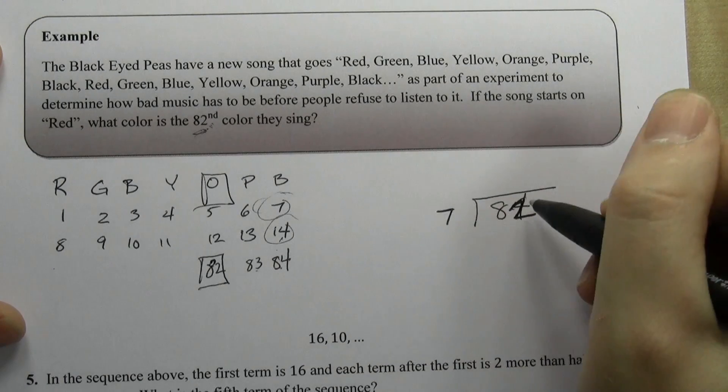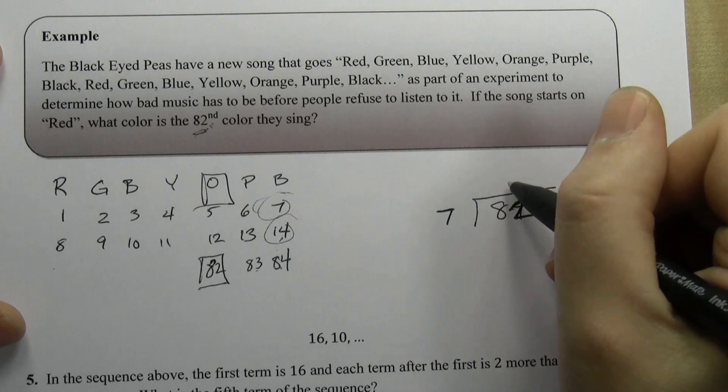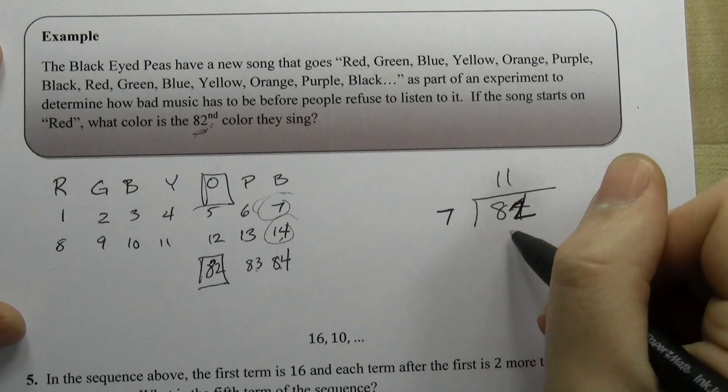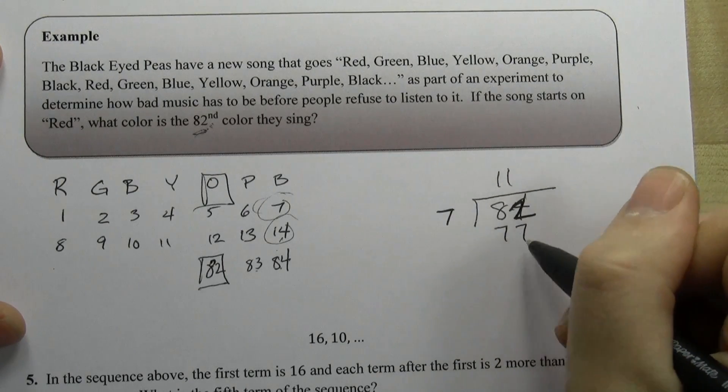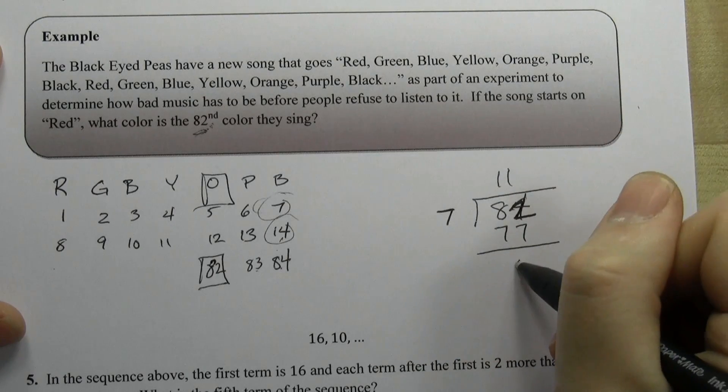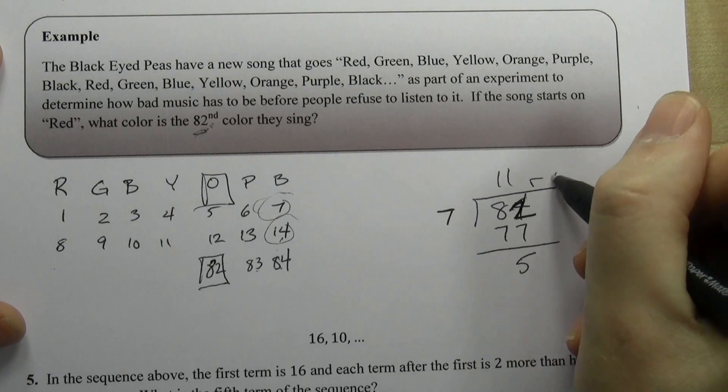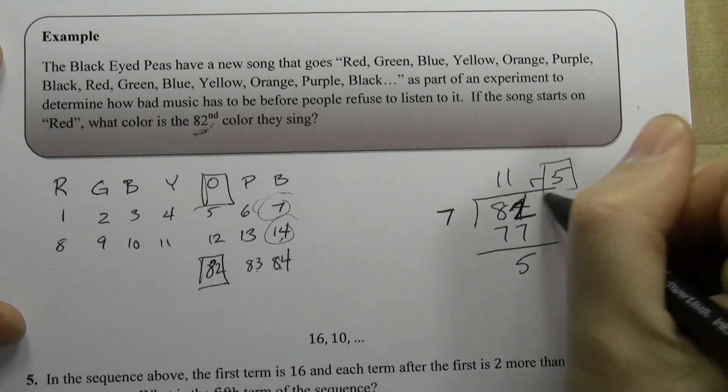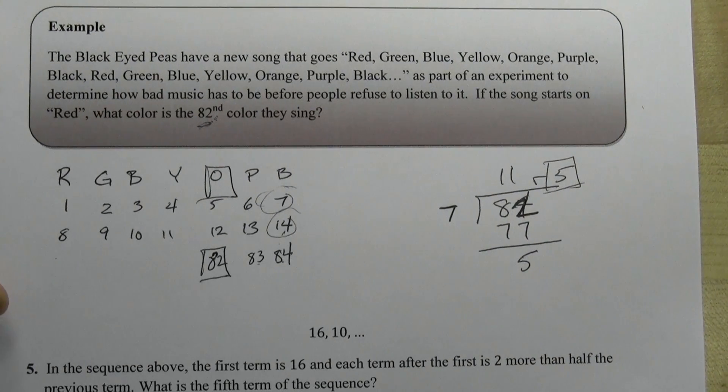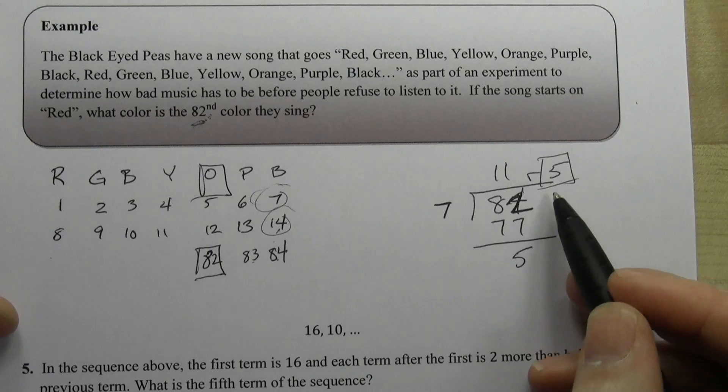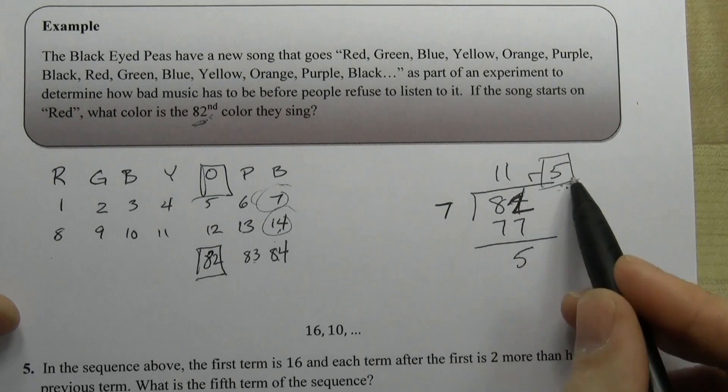So 7 goes into 82 eleven times. 11 times 7 is 77 with a remainder of 5. Now don't find a decimal, find the remainder, which means that you really should probably do long division and not use your calculator here.